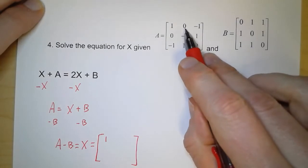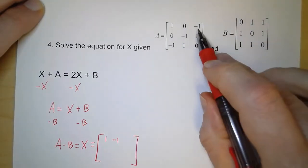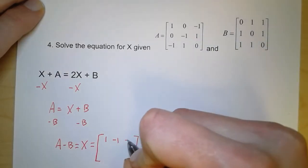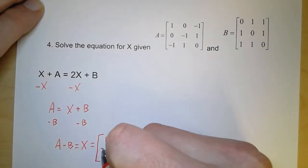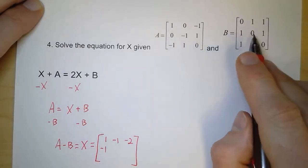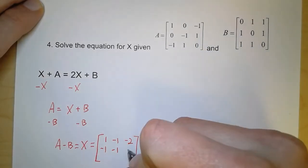Negative 1 minus 1 is negative 2. Go on down to the second row. 0 minus 1 is negative 1. Negative 1 minus 0 is negative 1. And 1 minus 1 is 0.